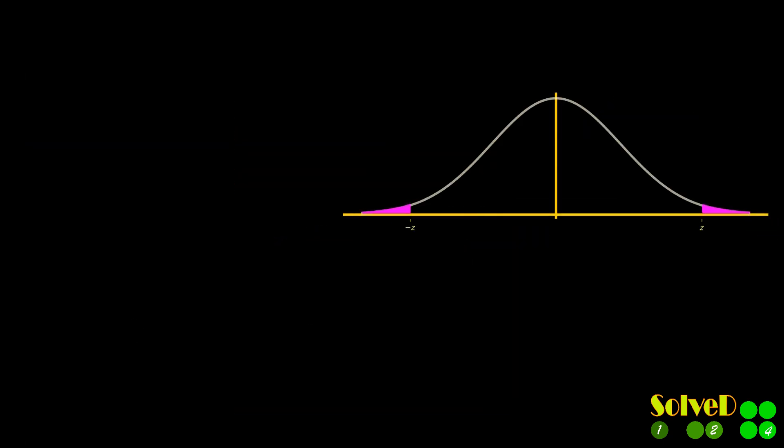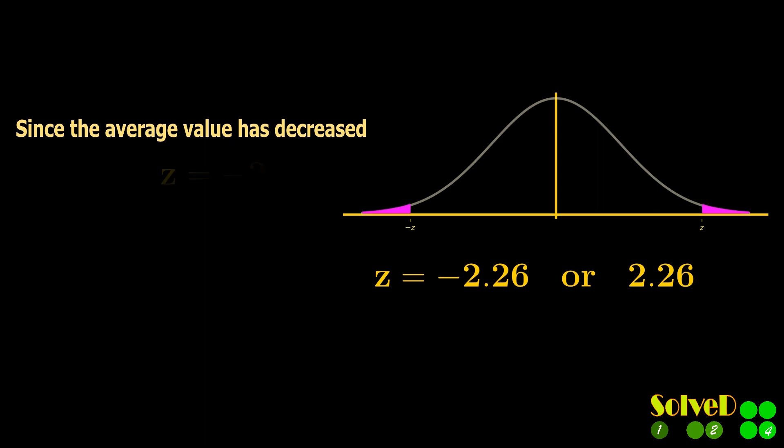Due to two tails, the z-value can be on the right side or the left side, that is, positive or negative. Since it is given that the average value has decreased, use the negative z-value.